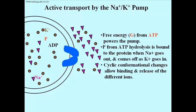To summarize, free energy, G remember, from ATP hydrolysis is what's going to power this pump. The phosphate actually participates in the process by binding to the sodium-potassium pump protein, causing a conformational change in which the sodium can bind and then be expelled from the cell. And the phosphate then is hydrolyzed as the potassium go into the cell. And again, cyclic conformational changes account for the binding and release of the different ions.